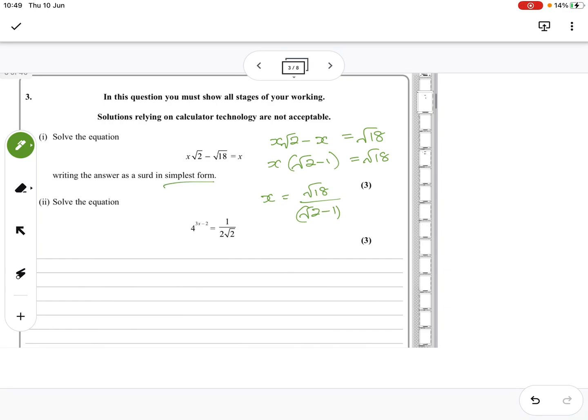Okay, once in its simplest form, which means ideally it wants it rationalized, it doesn't want that on the bottom. So instead of putting equals, I'm now just going to times by root 2 plus 1, top and bottom. Oh, where did I come there? I think I need a bit of space. I'll start again.